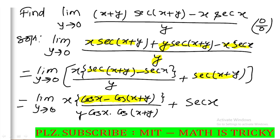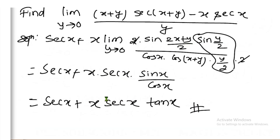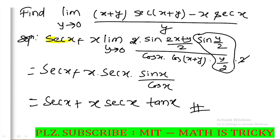So C minus cos — we go for the identity. Using sign/cos simplification: applying C plus D by 2 and D minus C, we resolve the expression. We get sec(x) into tan(x). So sec x plus sec x into tan x is our answer.